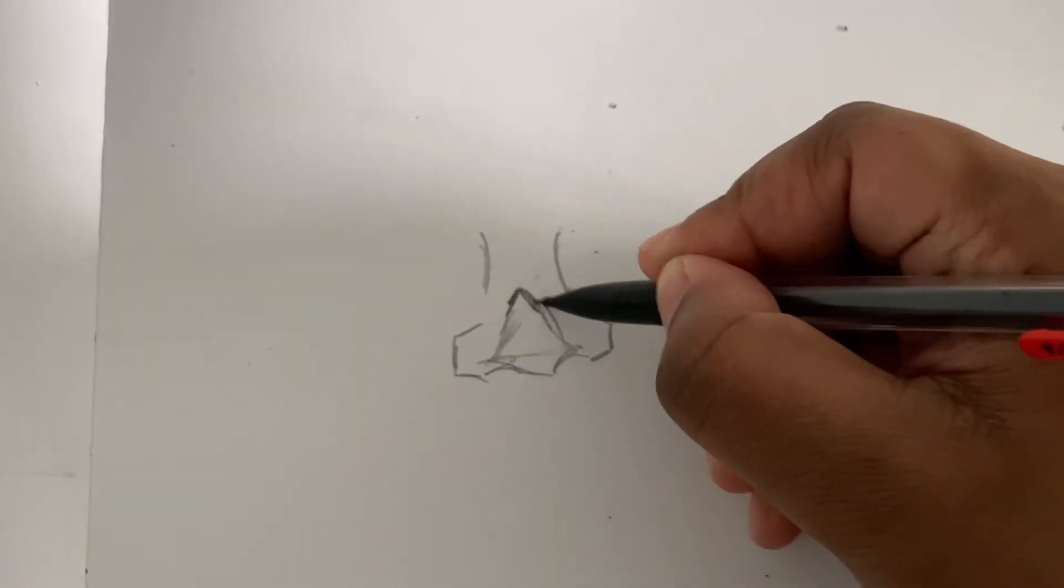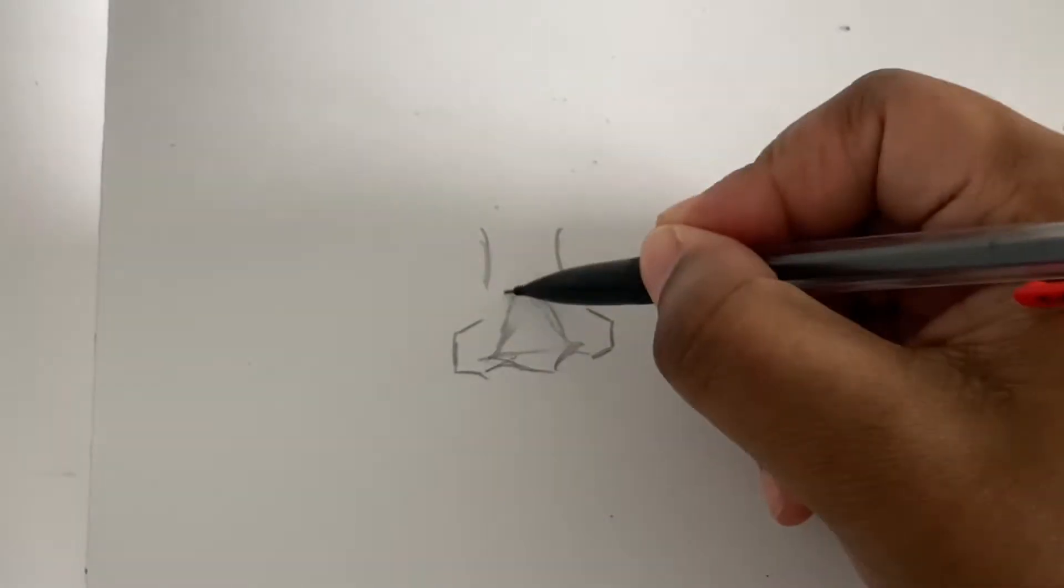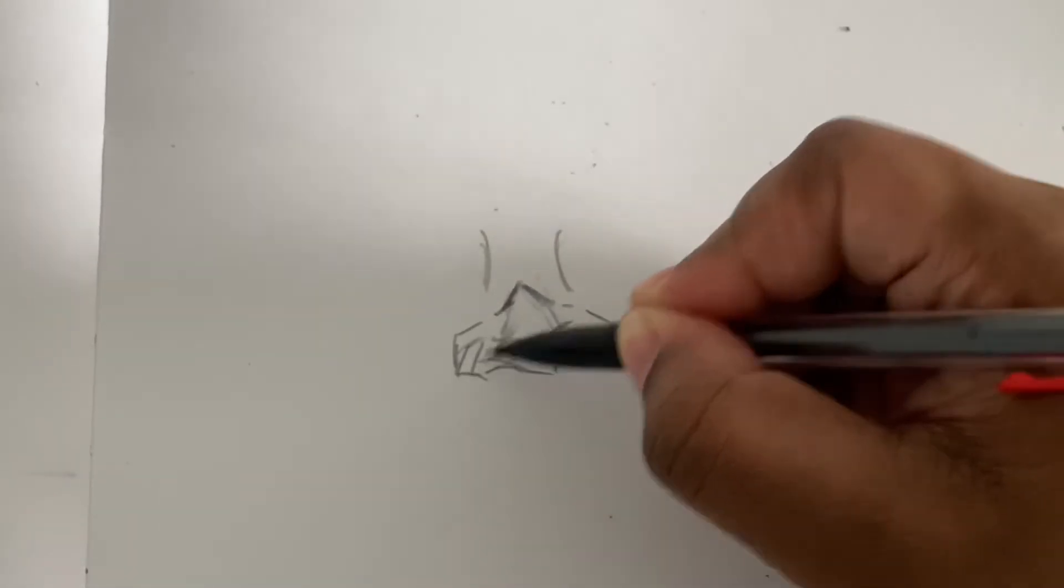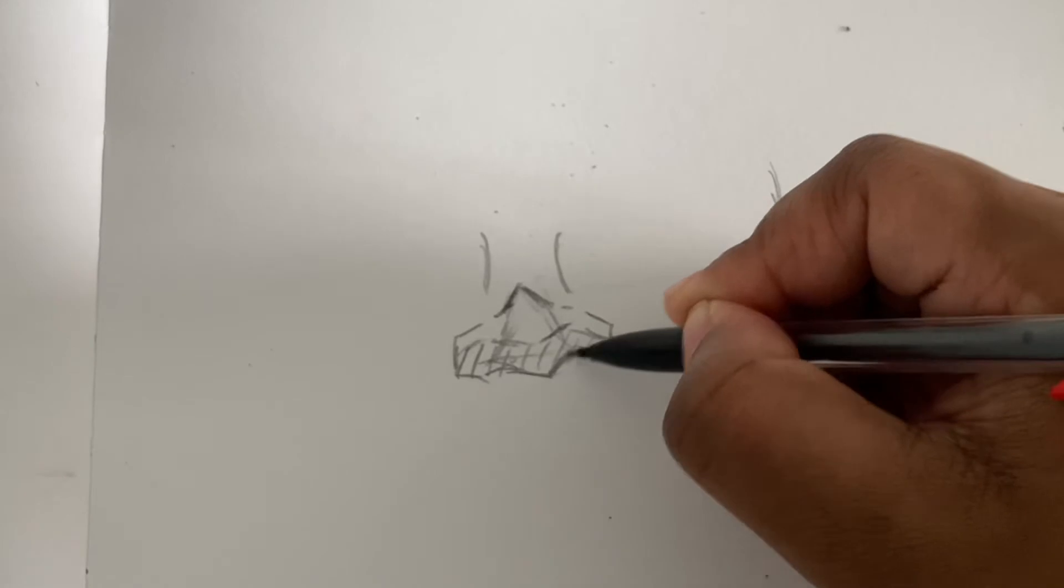So then right here, an example of what you should not do is make harsh lines. And then right here I did erase it but it left black marks, so do not do that.